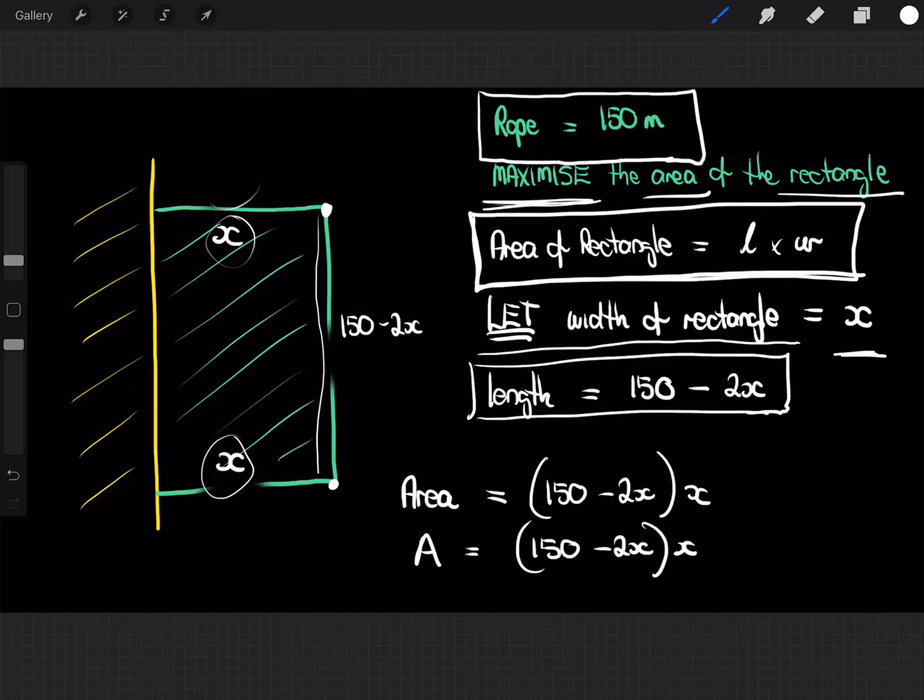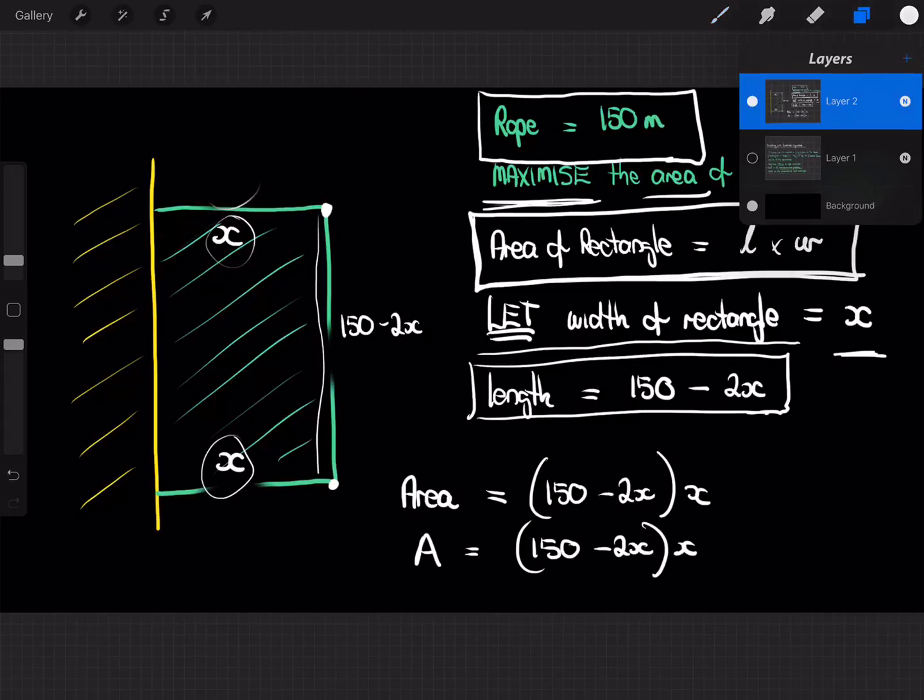Okay, welcome back. Now we're going to go ahead and solve this problem. So, let's do it. Now, the area, the problem is that we've got the area equals 150 minus 2x multiplied by x.